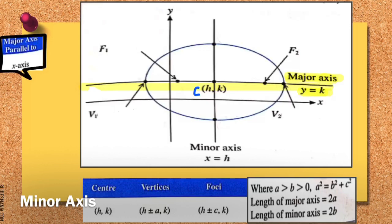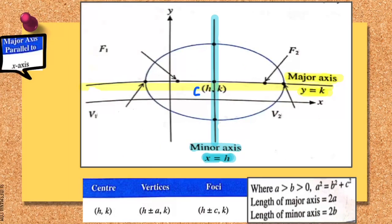Your minor axis will be opposite to your major axis, and it will also cut through the point of the center. Let me highlight here — this is your minor axis, where your minor axis is at the line x equal to h.